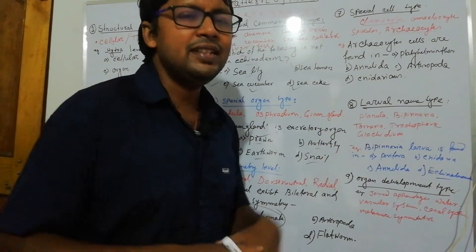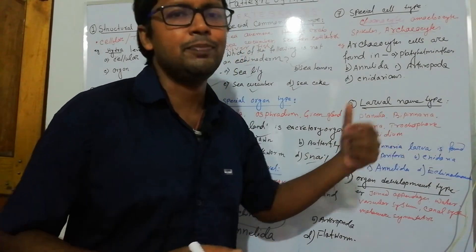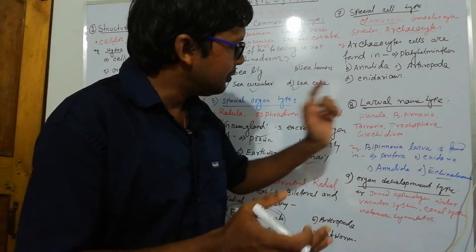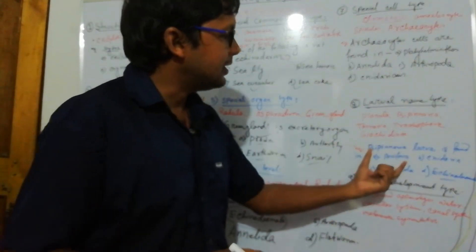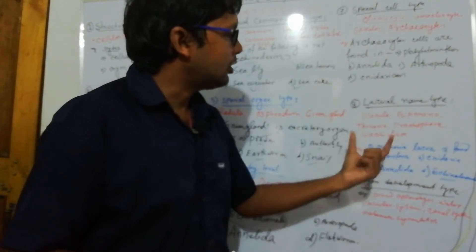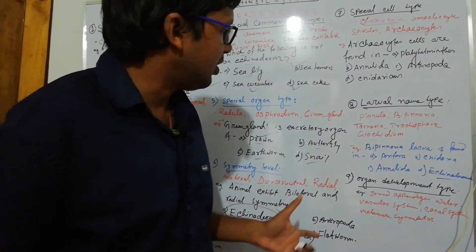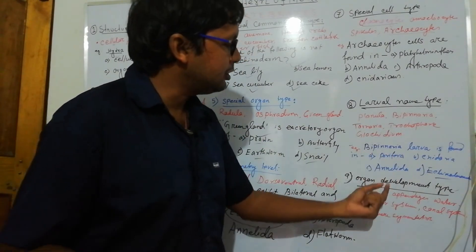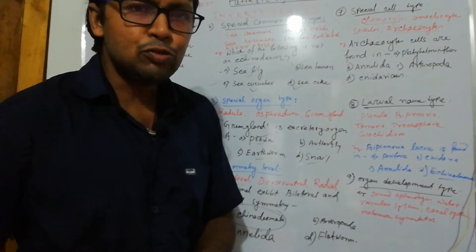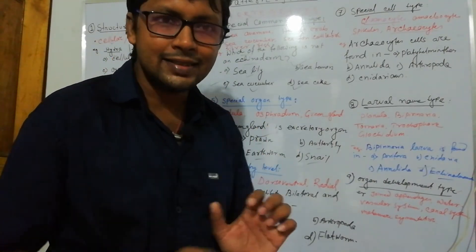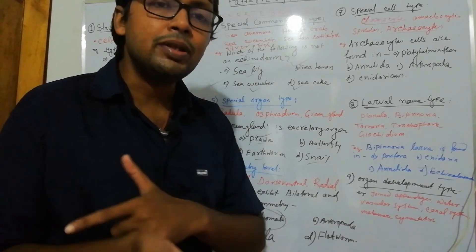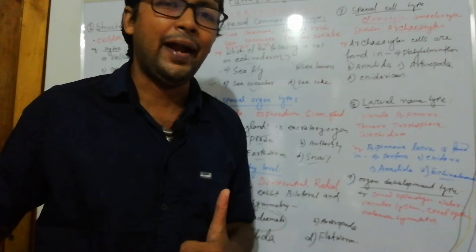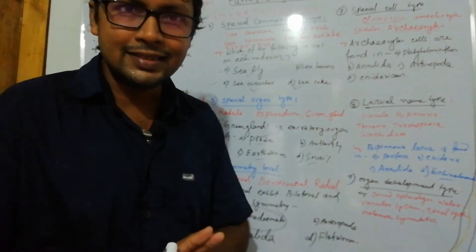Larvae name type is another very important pattern. Whenever larvae are asked, all larvae names should be clear in your mind. Examples: planula, bipinnaria, tornaria, trochophore, glochidium — these are all kinds of larvae. Bipinnaria is an echinoderm trait. I have already discussed these and will give you the PDF format in the description showing different patterns so that after analyzing the pattern you can answer anything.